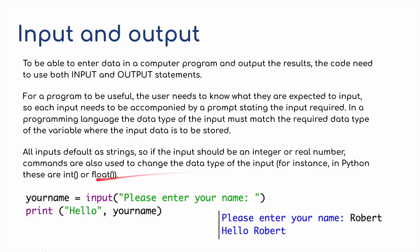In a programming language, the data type of the input must match the required data type of the variable, where the input data is to be stored. All inputs default to strings. So if the input should be an integer or a real number, commands are also used to change the data type of the input. For instance, in Python, this is int for input, just a real, a regular number, or an integer number, or float for a real number. Here's a little example of inputs and outputs. Just a straightforward string variable, your name equals input, please enter your name, a message, a prompt, and then print, hello, a string, hello, and then the variable, your name. So the output for that would be, please enter your name, I've inputted Robert, and it would give me, it would print out hello, and then the value stored in your name, which in this case is Robert.